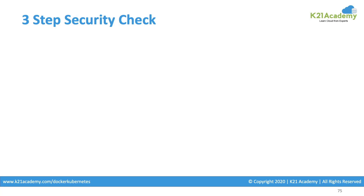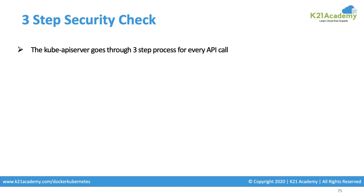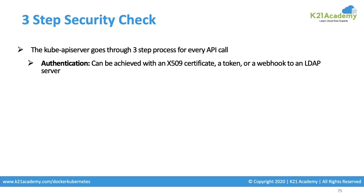The security check is done in three steps. The Kube API server picks up the commands we are executing and actually goes through a three-step process for all the API calls it runs through. First, we are authenticated.